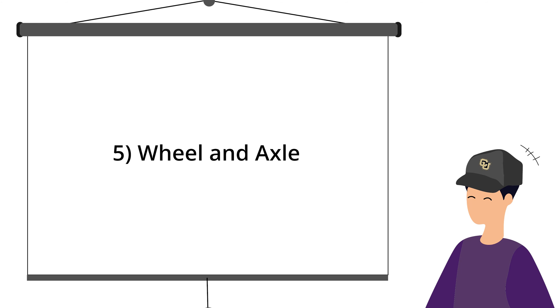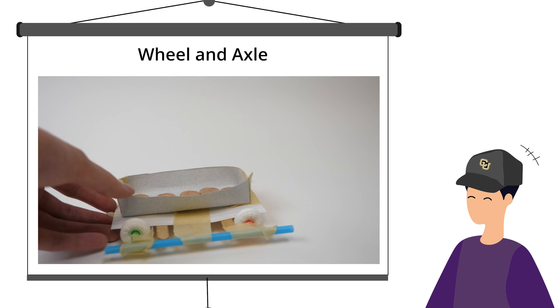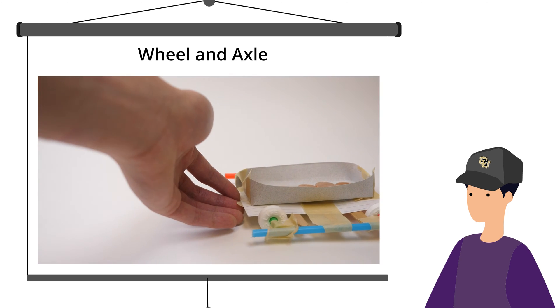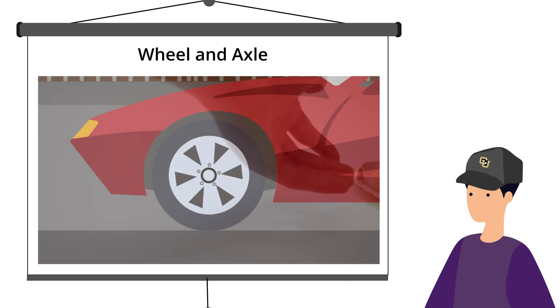Wheel and axle. A wheel and axle is a wheel attached to a rod or stick. It works similarly to a lever in that, considering movement about the circumference, the distance the wheel circle moves is much greater than the distance the small axle circle moves.